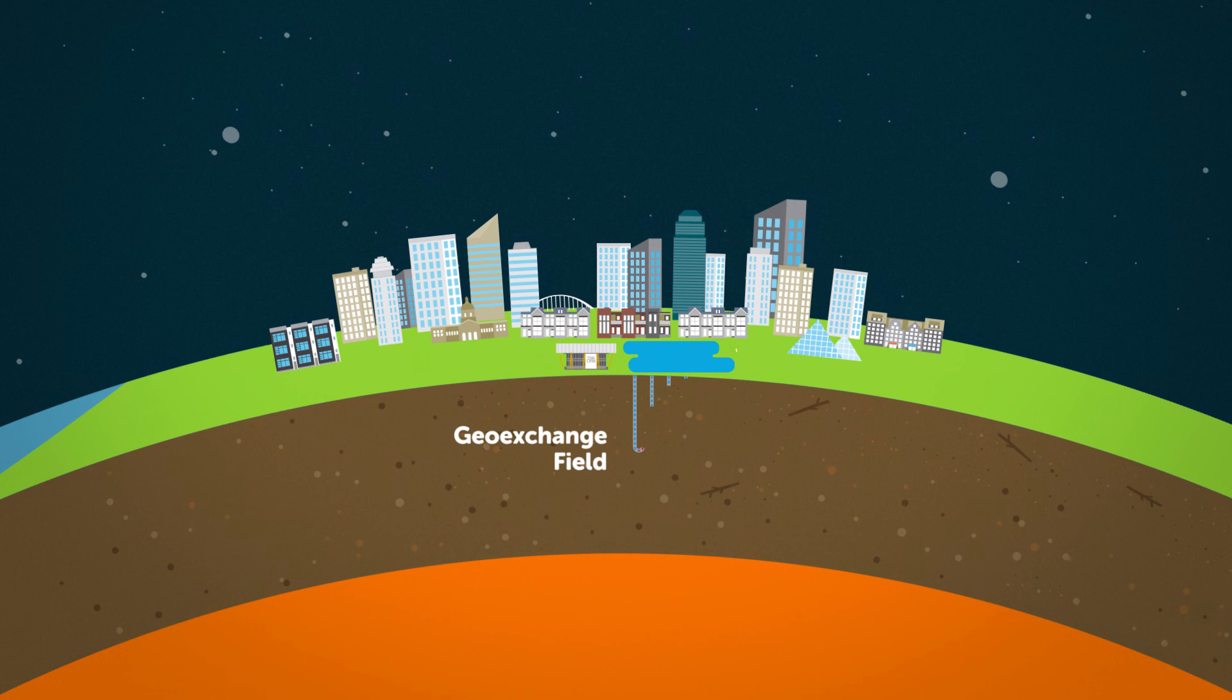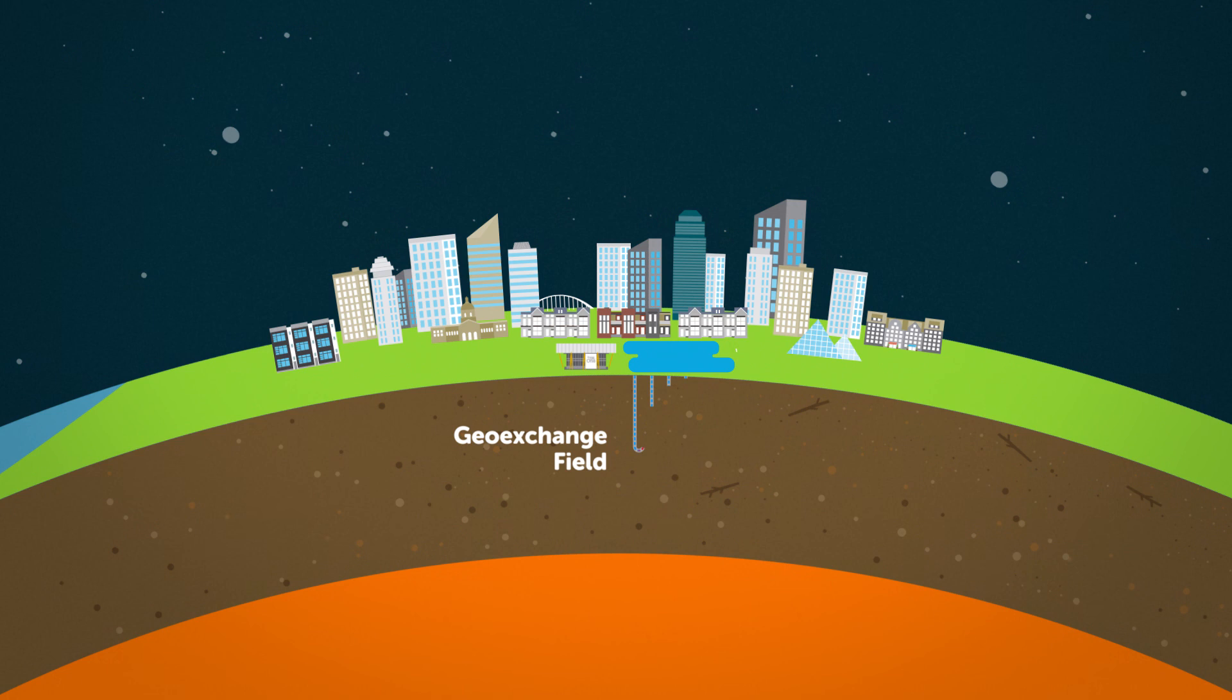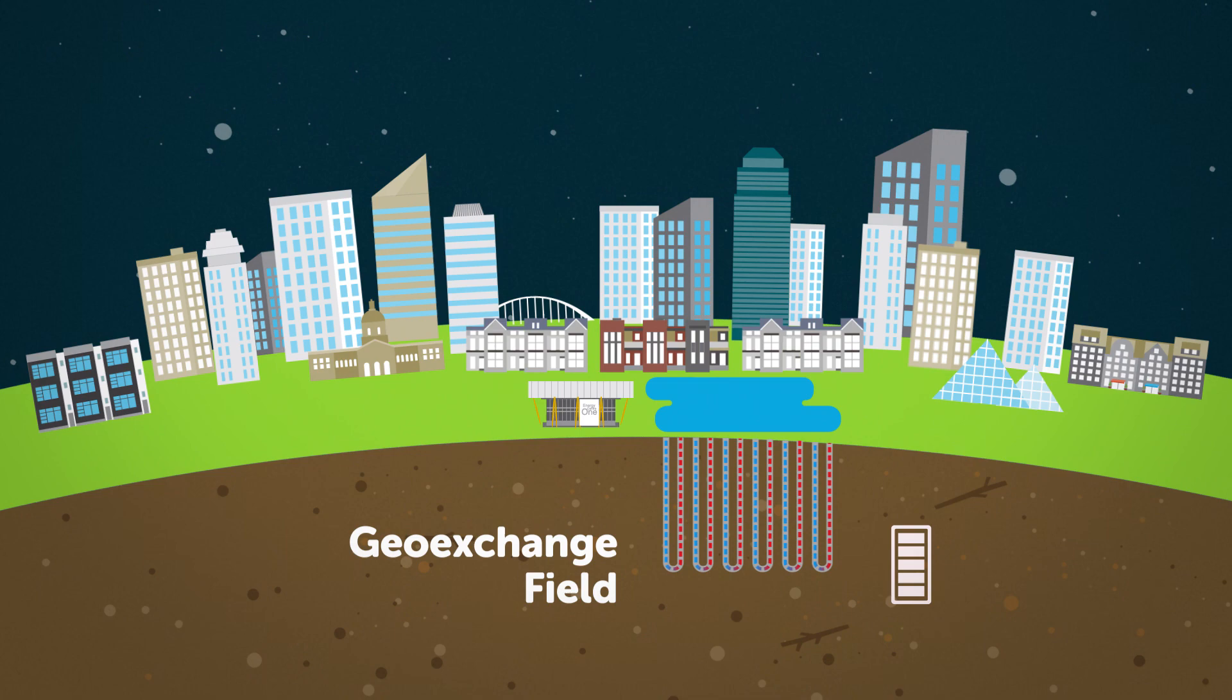To access this renewable energy, we've built a geo-exchange field by drilling boreholes 150 meters into the Earth, where the temperature is always around 8 degrees Celsius, even in winter. This geo-exchange field is like a massive ground energy battery that charges the district energy sharing system.